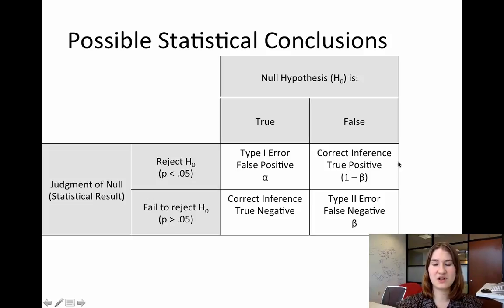On the other hand, if the null hypothesis is false but we fail to reject it, this is a different type of error. This is something called a Type 2 error, or a false negative. And that's what this beta is.